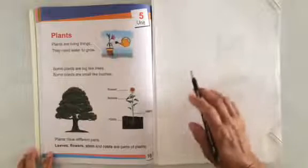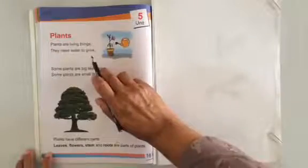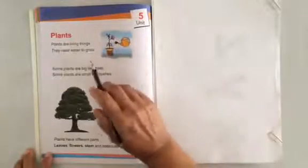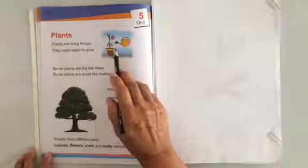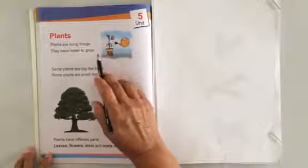Plants are living things. They need water, air and sunlight to grow.